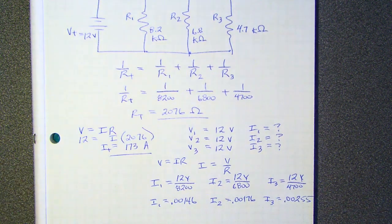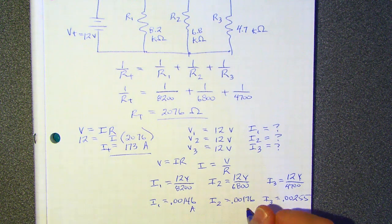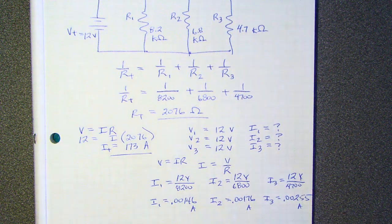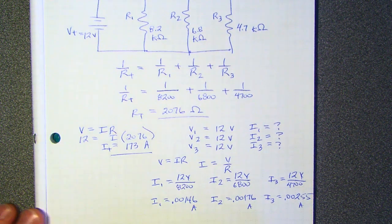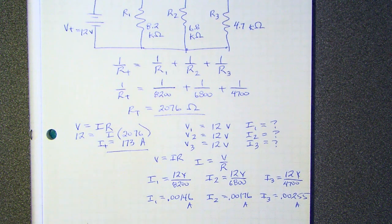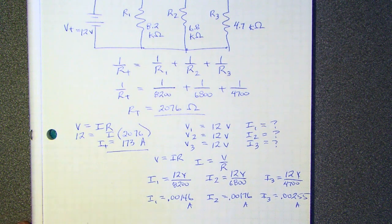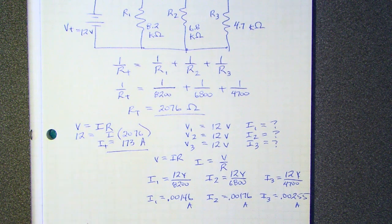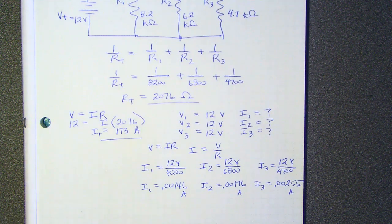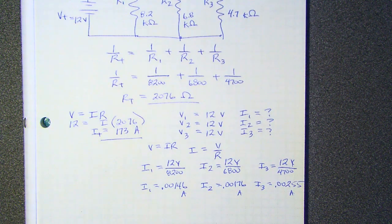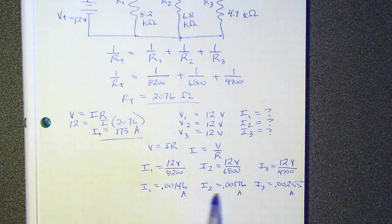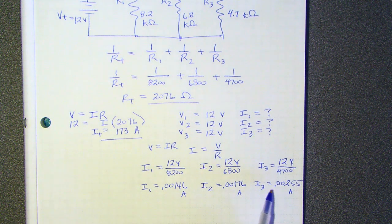Here are three currents at three different resistors. If those are correct, they should add up to the total current in the circuit. How do you feel about that? If these are correct, these three currents, they should add up to the total current.